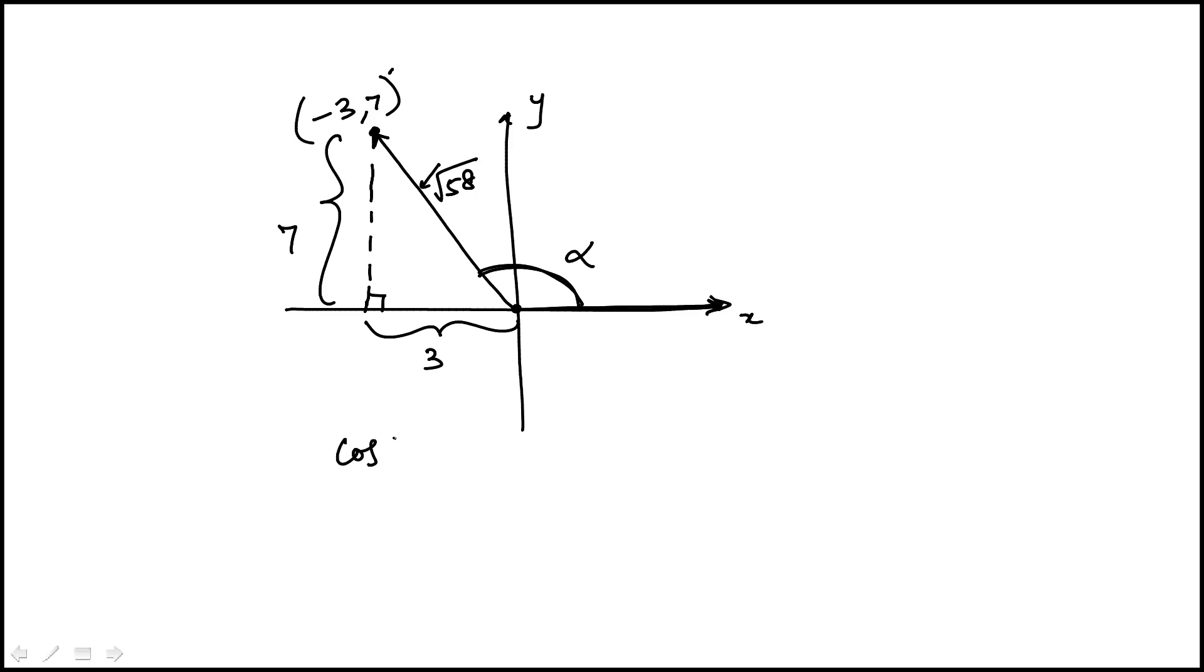To find the cosine of alpha, we find the adjacent which would be -3, because note in the second quadrant cosine would be negative, and then divide by the hypotenuse. So this would be cosine of alpha, which is choice B.